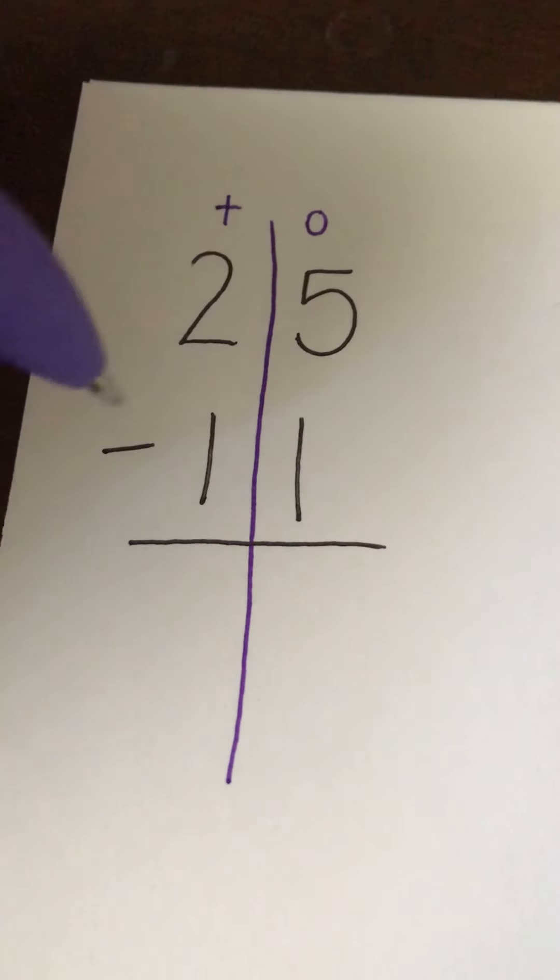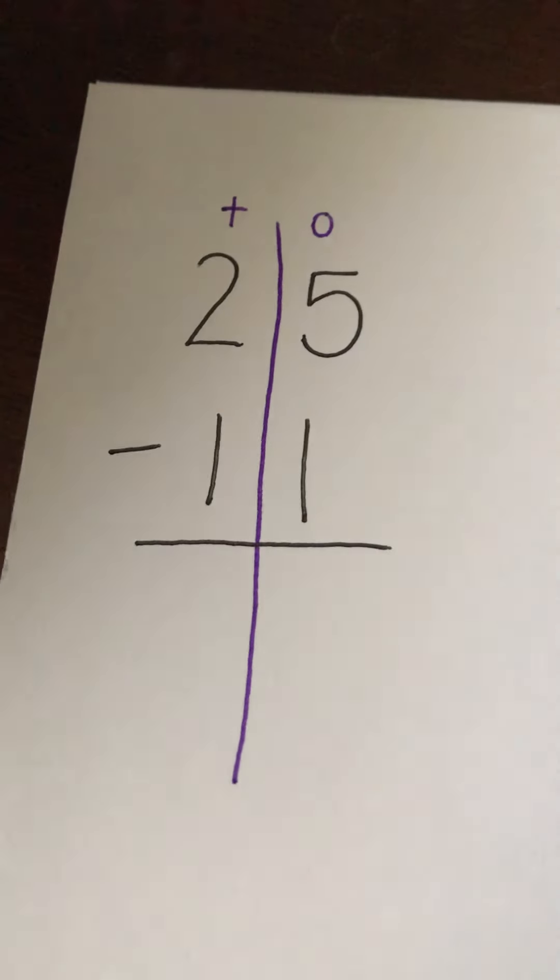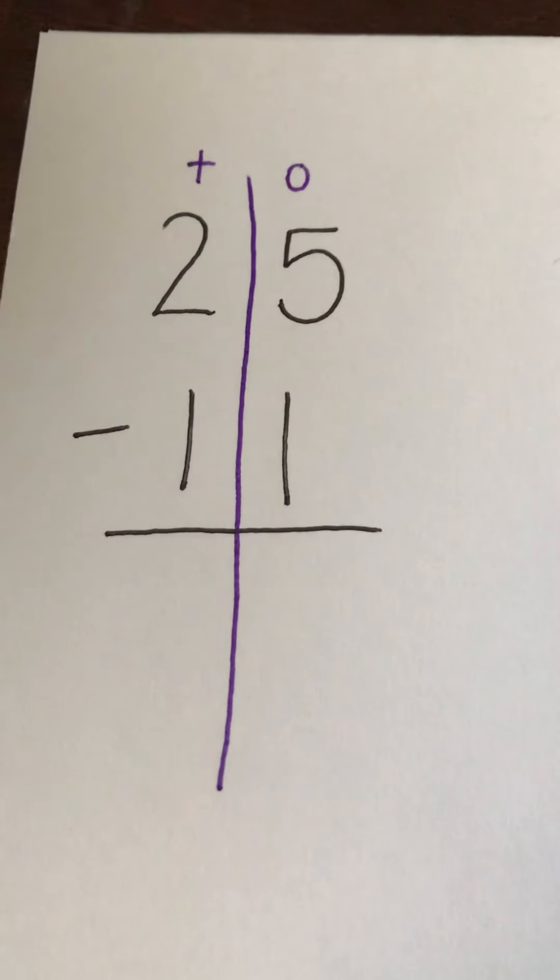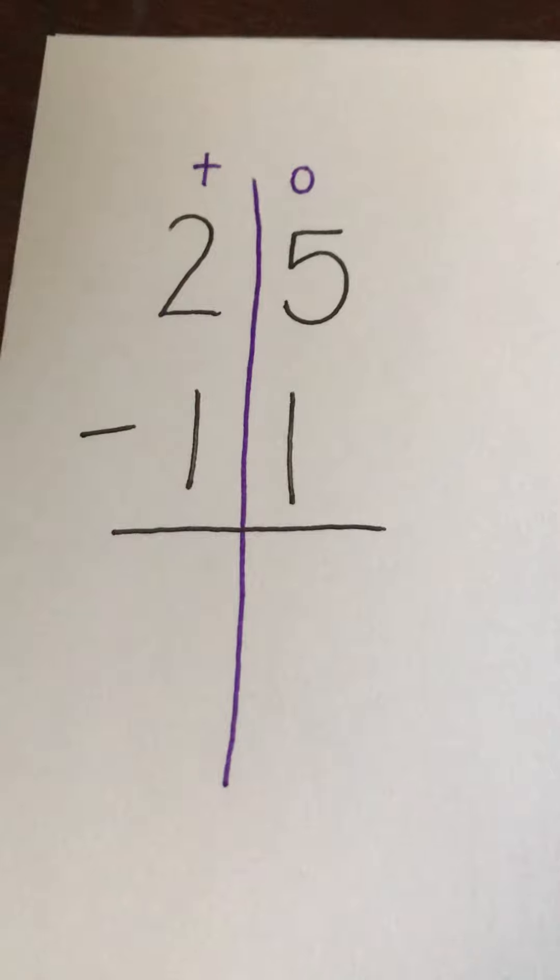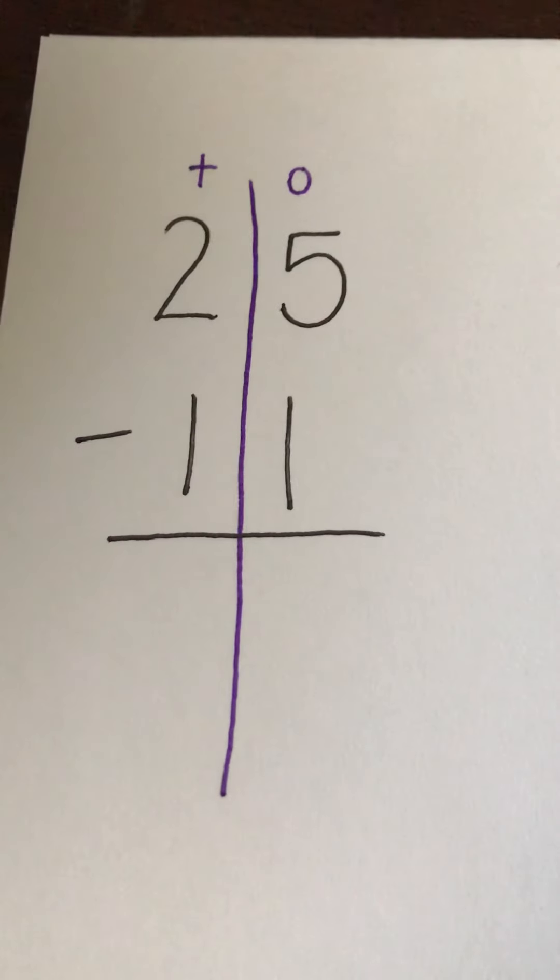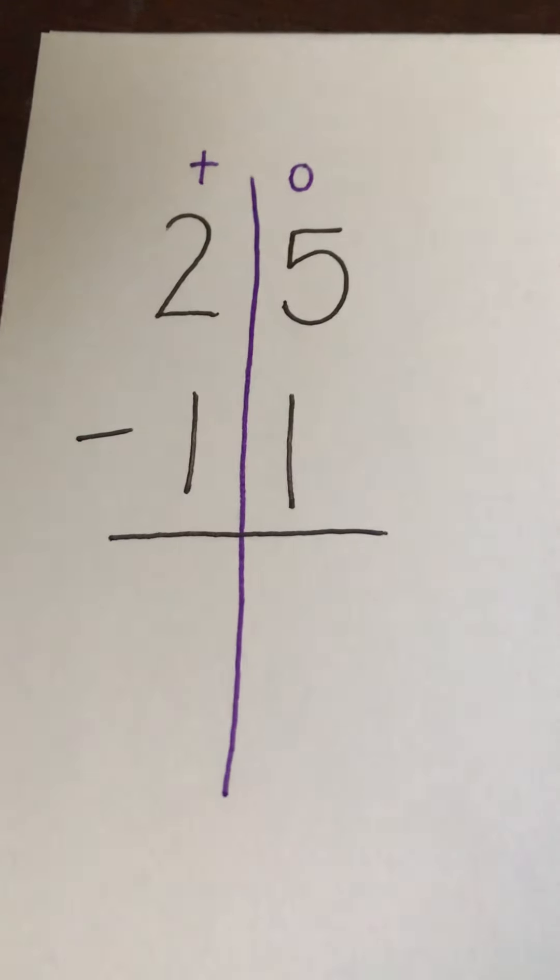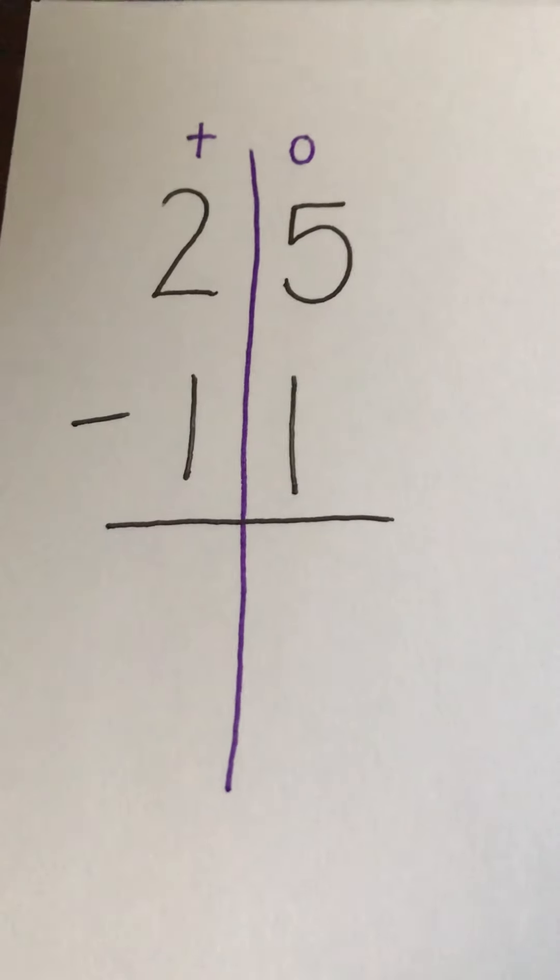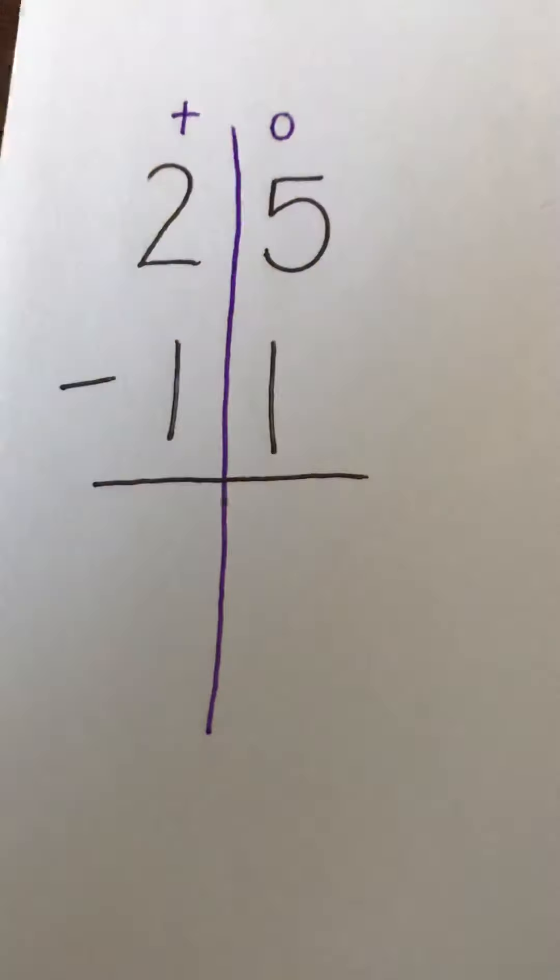So we're going to look at five minus one. If I'm not sure how to do five minus one, I have strategies that I can use to help me. I could use fingers as long as I have enough. I could draw circles and cross them out. I could use manipulatives like toys or marbles or things like that at home. But for right now, I'm going to use circles.